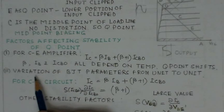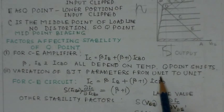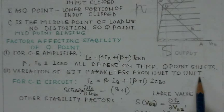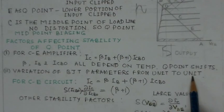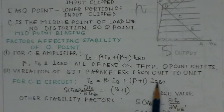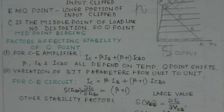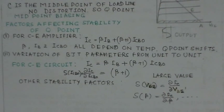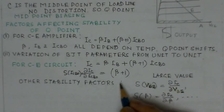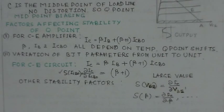Another important factor is variation of BJT parameters from unit to unit, which also causes a shift in the operating point. The stability factors considered are: delta IC over delta ICBO with respect to reverse leakage current; delta IC over delta VBE with respect to base-emitter voltage; and S_beta = delta IC over delta beta. These are the three kinds of stability factor, and the most prominent one is usually considered.